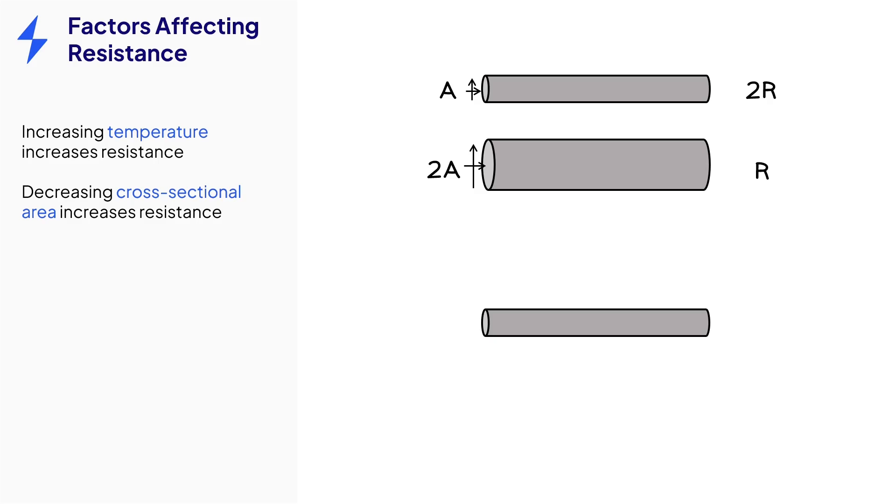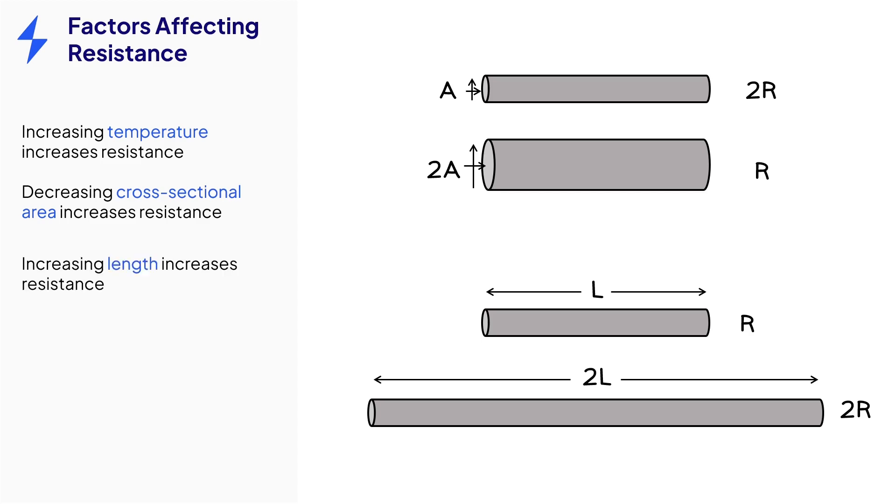Now take that same thin wire of length L, and an identical wire that is double its length. The longer wire will have double the resistance of the shorter wire. And again, that makes sense, because the further the charge flows in the wire, the more likely they are to have a collision with a metal ion.